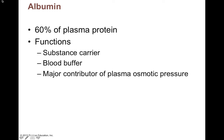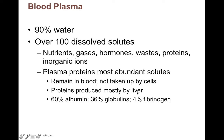Most of these plasma proteins are made by your liver. So if you have liver failure, you can lack a sufficient amount of these proteins for things like blood clotting, immune defense, and even holding onto your own body water.